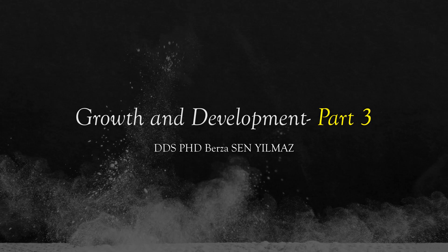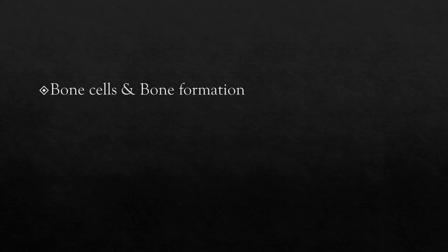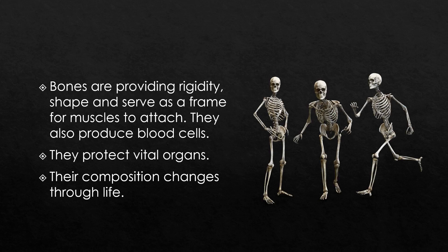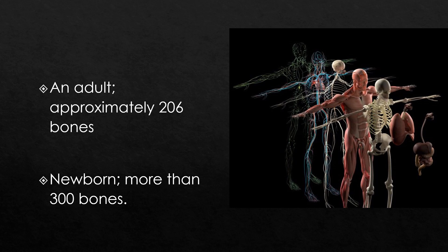In the third part of the webinar, we will discuss bone cells and bone formation in detail. Bones provide rigidity, shape, and serve as a frame for muscles to attach. They also produce blood cells and protect our vital organs. Their composition changes through life. An adult has approximately 206 bones in the body.